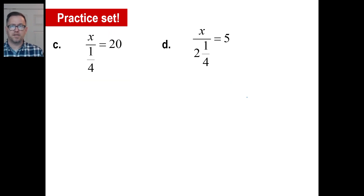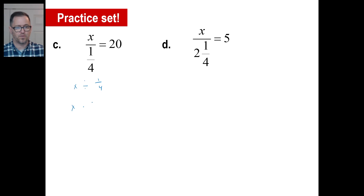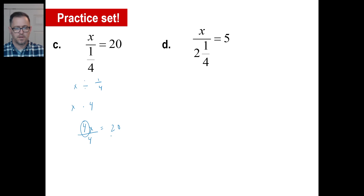Try C — pause it and try. If you look at this as x divided by 1 fourth, that's the same thing as x times 4 over 1, which is just 4. So that means it's 4x, and 4x equals 20. That's an integer right here, so you just divide by 4 on both sides. x is equal to 5.